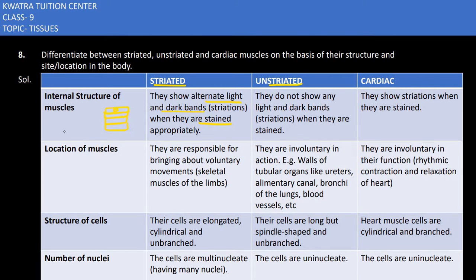Unstriated muscles do not show any light or dark bands. Cardiac muscles show striations, like striated ones — cardiacs are the same as striated ones in that sense. When you stain them, it is possible to see dark bands and light bands.